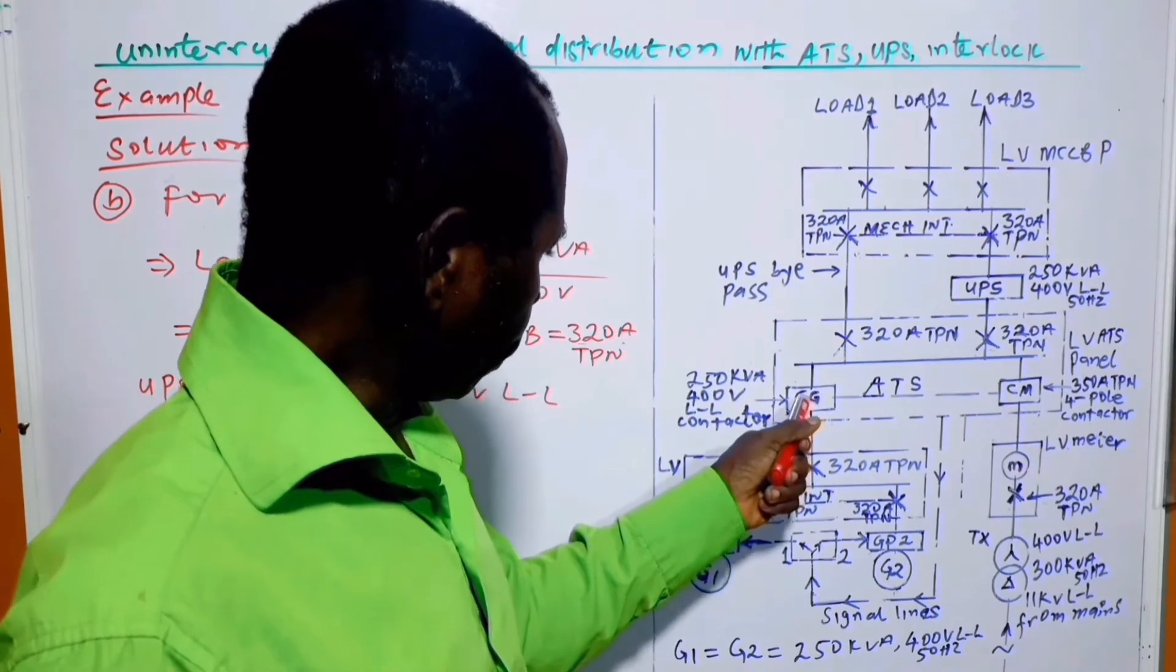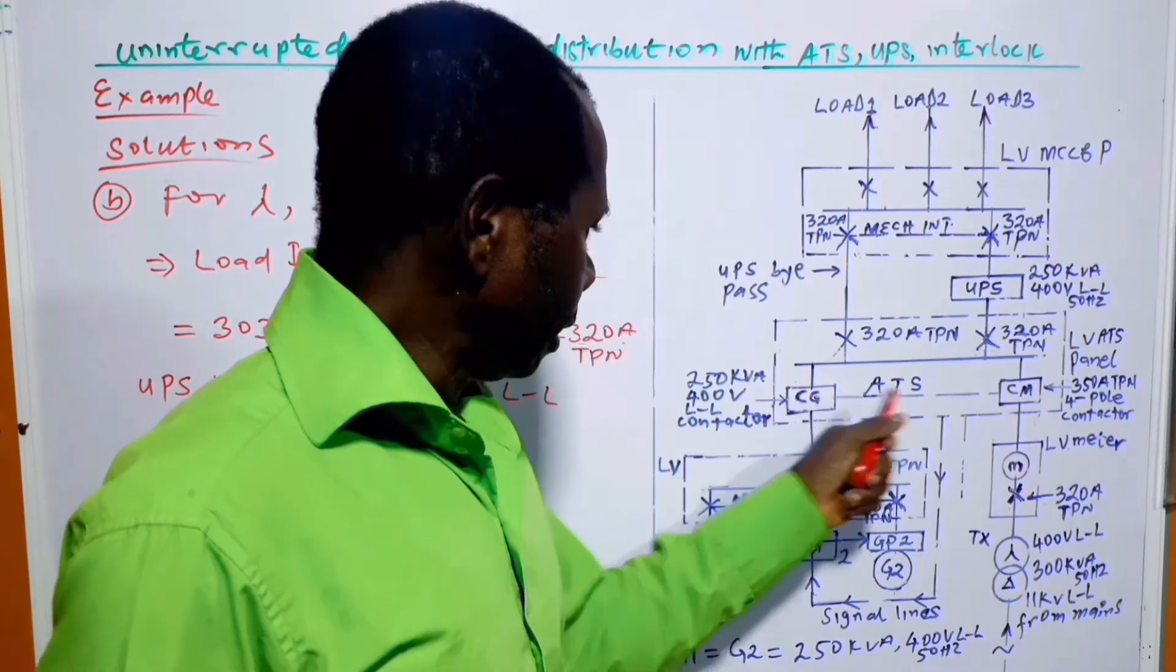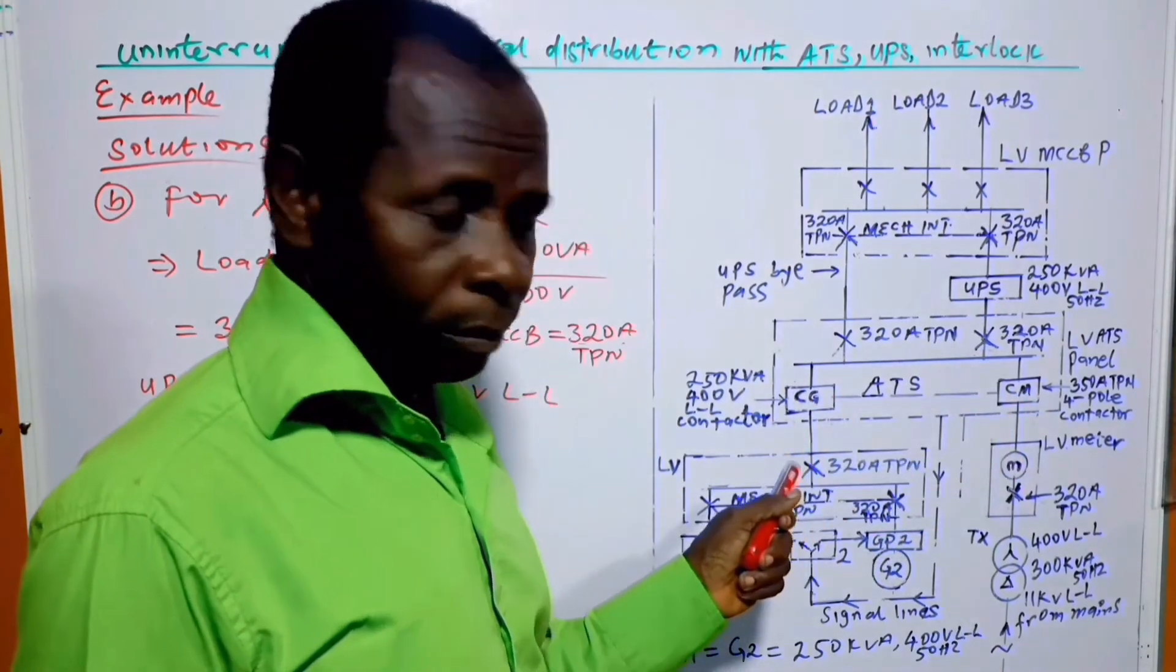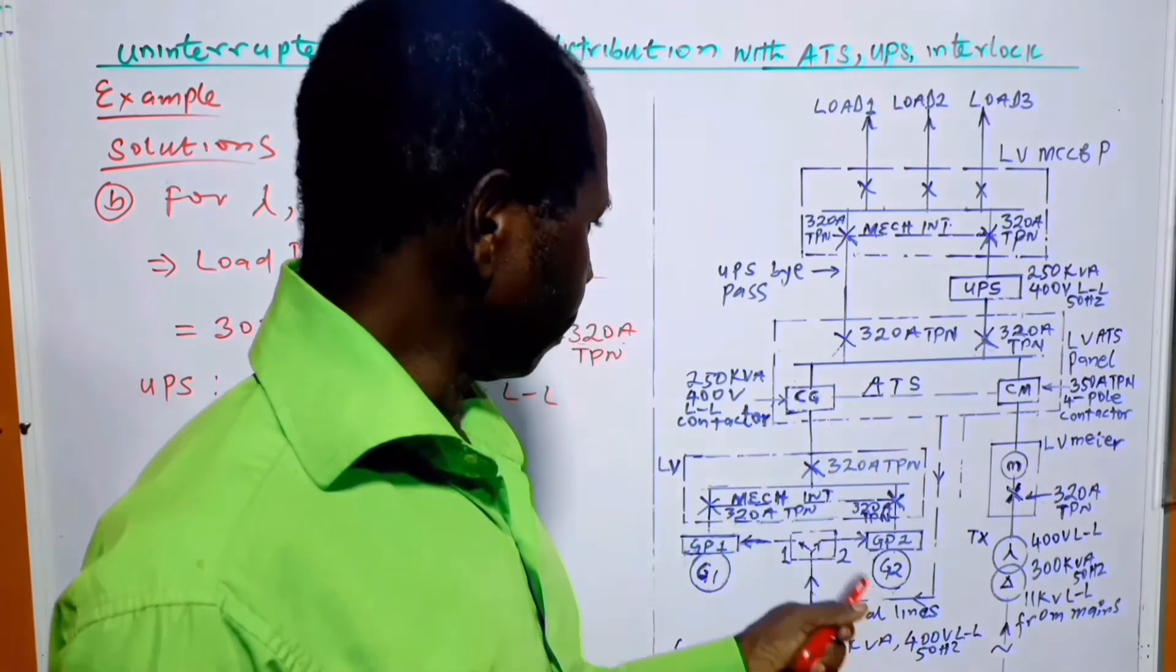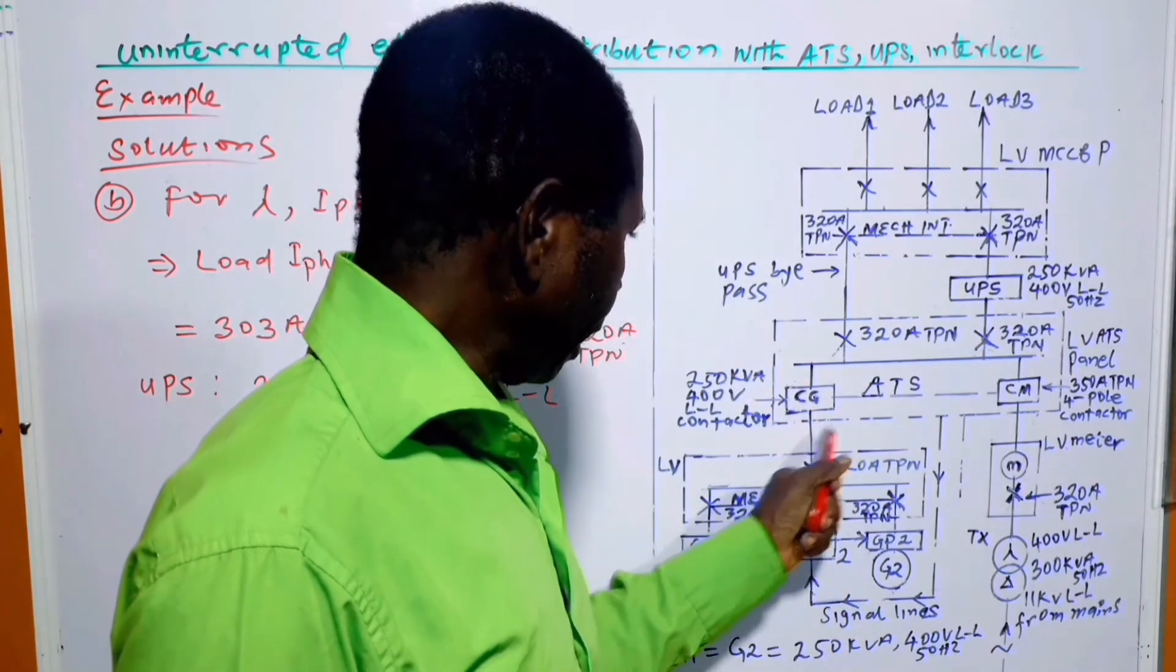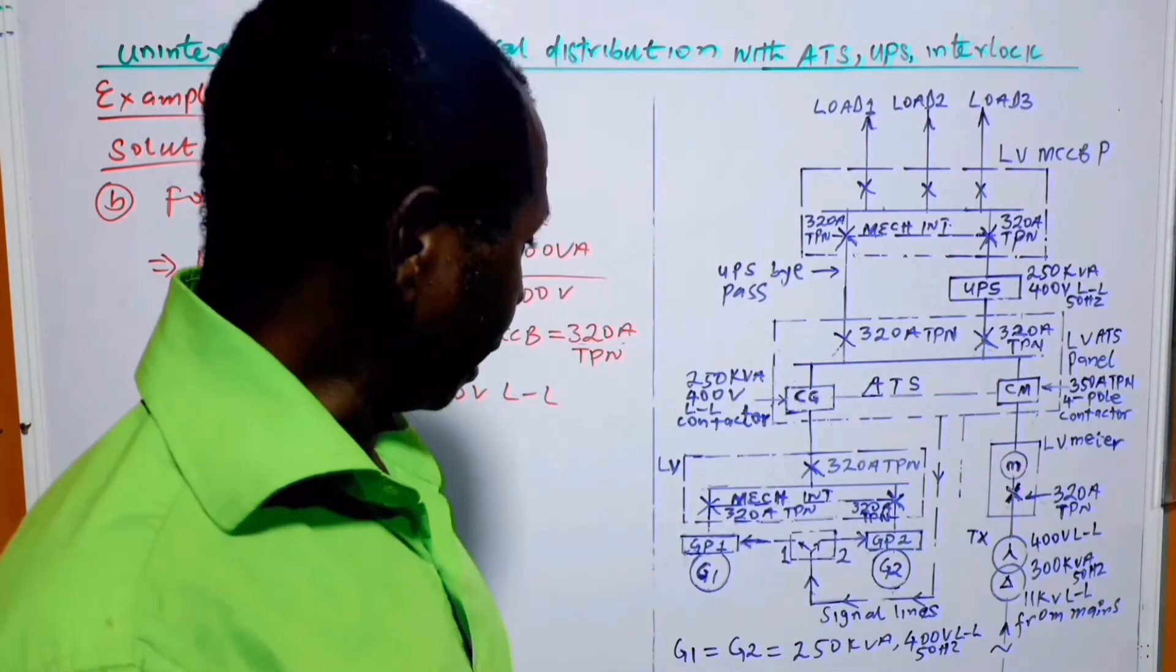From here we go to the contactor for the generator, and they are linked together making use of this ATS. When this one is energized, this one is de-energized. The two of them should not be energized at the same time.